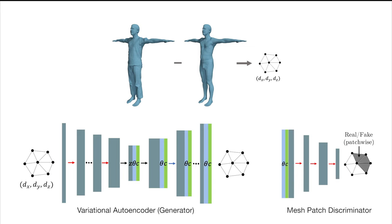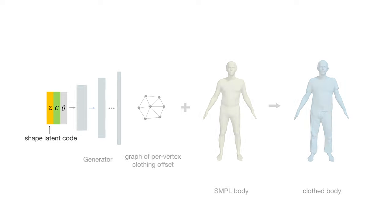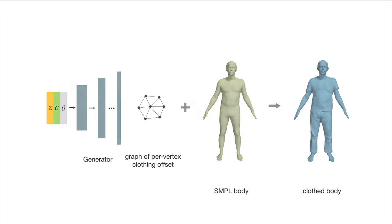Furthermore, we introduce a patchwise discriminator that encourages fine structures in the generated examples. At test time, given a body pose, garment type, and random sample from the learned latent space, our model dresses up SMPL with a clothing offset layer.